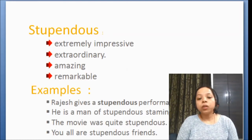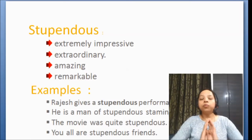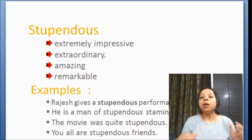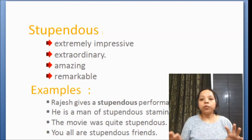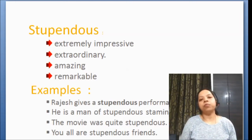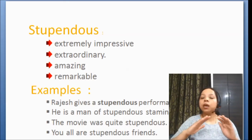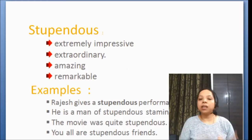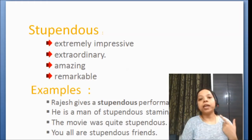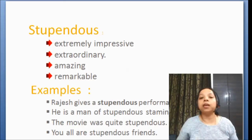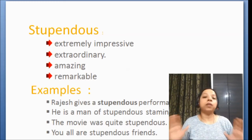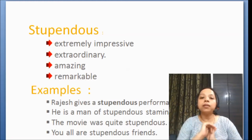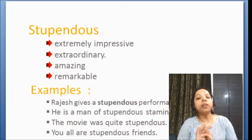Third example: 'The movie was quite stupendous.' Like, joh movie thi woh far, far better thi — bohut zhaada. Ek normal movie hoti hai ki hume achi laghi, movie achhi thi. Lekin ek hote hai ki achhi se bhi oopar thi — kafi zhaada achhi thi. Uski performance achhi thi, casting achhi thi, storyline achhi thi, songs achhe the — everything was stupendous, everything was brilliant, everything was amazing. So, the movie was quite stupendous.